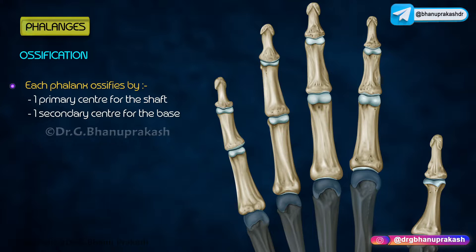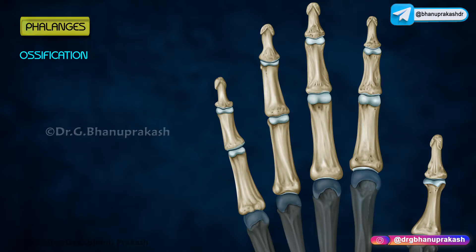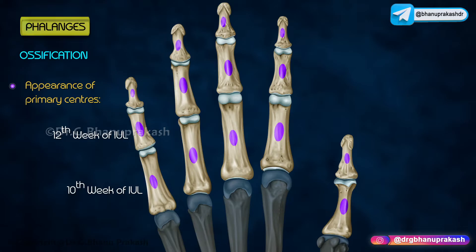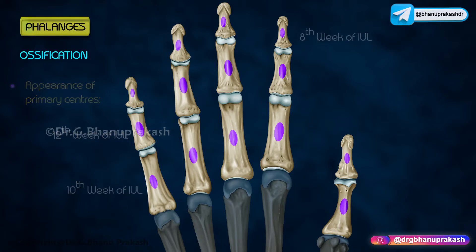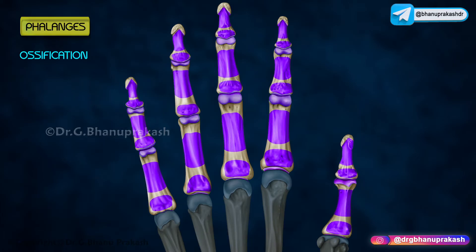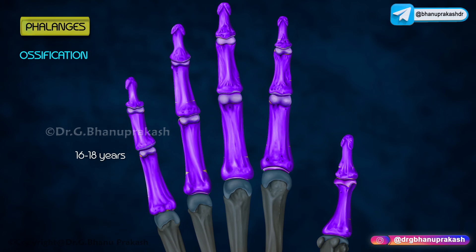Ossification: Each phalanx ossifies by one primary center for the shaft and one secondary center for the base. Primary centers appear: proximal phalanx by the 10th week of intrauterine life, middle phalanx by the 12th week, and distal phalanx by the 8th week of intrauterine life. Secondary centers appear by 2 years. Fusion of the diaphysis with the epiphysis occurs by 16 to 18 years.